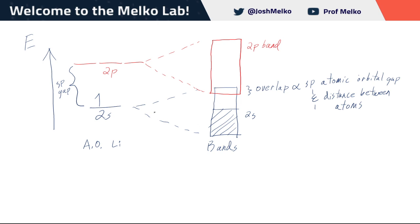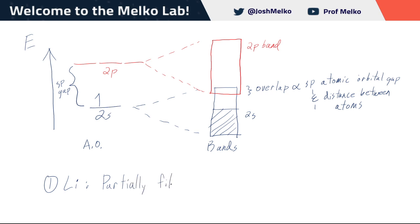Different types of elements — if it's not lithium but maybe magnesium, aluminum, or carbon — will give rise to different sorts of bands. We can think about lithium first: lithium is going to have a partially filled lower band, and we call this lower band the valence band, because it's the one emerging from the valence electrons in lithium.